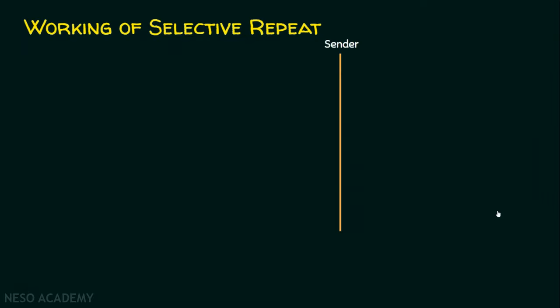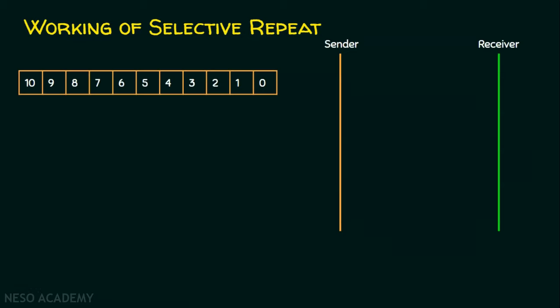Suppose we have a sender and a receiver. Let's say there are 11 frames to be sent, numbered 0 through 10. These numbers are the sequence numbers. We know the basic working of selective repeat ARQ. There is a window size here, though it doesn't have a significant role to play with selective repeat.